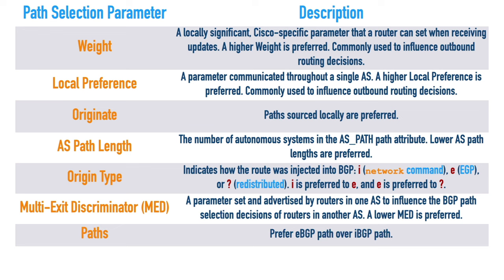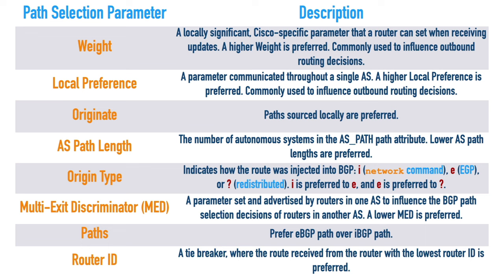Next up is peers - we're going to prefer an eBGP path, meaning a BGP route sent between two different autonomous systems, over an iBGP path, where neighbors are members of the same autonomous system and exchange routes. That's an iBGP path, and it's going to be less preferred. If everything is a tie, and oftentimes it is, then we're going to go with the router ID - the lowest router ID is going to be preferred.